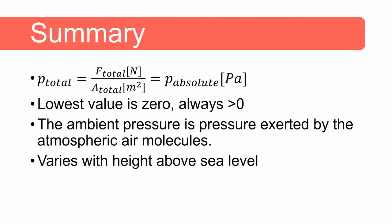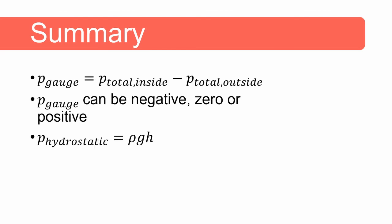So in summary the total pressure is equal to the total force divided by the total cross-sectional area and that will give us a value in Pascal. The lowest value that you can get for pressure is zero. Total pressure will always be bigger than zero. Ambient pressure is pressure exerted by the atmospheric air molecules and this varies with height above sea level. Gauge pressure can be calculated by subtracting the total pressure outside from the total pressure inside the container and gauge pressure can in fact be negative, zero or positive. And we know that hydrostatic pressure can be calculated with ρgh.